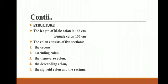Next, we will discuss its structure. The length of the male colon is 166 cm and the female colon is 155 cm. As discussed in the above slide, the colon consists of five sections: the cecum, ascending colon, transverse colon, descending colon, and sigmoid colon, and the rectum.